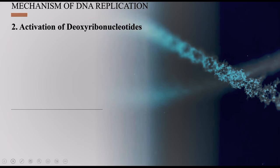The second step is activation of deoxyribonucleotides. This activation takes place in the nucleoplasm — the region present inside the nucleus. There are four types of deoxyribonucleotide molecules in the nucleoplasm.